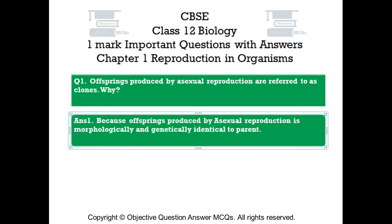Question number 1: Offsprings produced by asexual reproduction are referred to as clones. Why? Answer number 1: Because offsprings produced by asexual reproduction are morphologically and genetically identical to the parent.